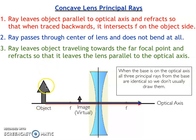If instead I had drawn the object up here off of the optical axis, then we would draw all three principal rays from the base of our object, and we would find that we can trace them back to find the base of our image, similar to what we did for the convex lens.